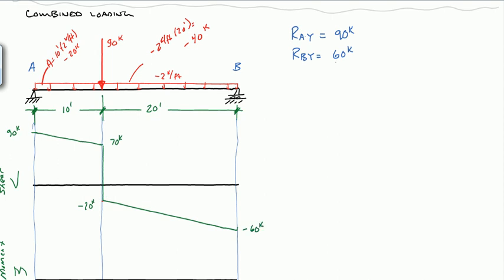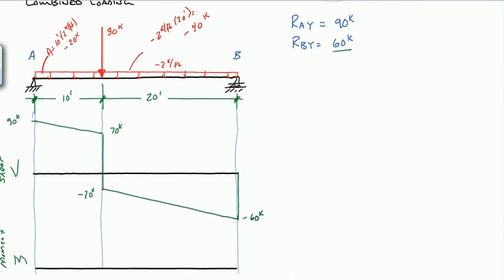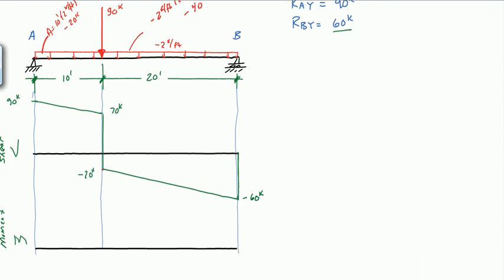From the point load to the right end (20 feet), the area of the load diagram is minus 2 kips per foot times 20 feet equals minus 40 kips. Starting at minus 20, we drop an additional 40, reaching minus 60 kips — which equals the right-end reaction of 60 kips, confirming our answer. That completes the shear diagram.